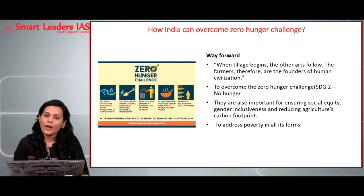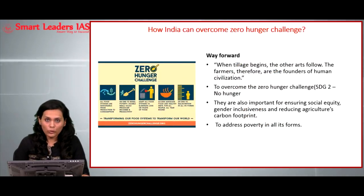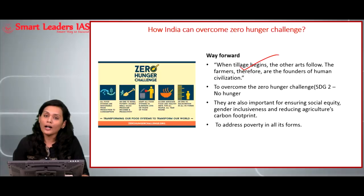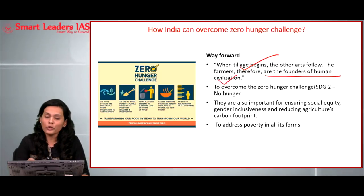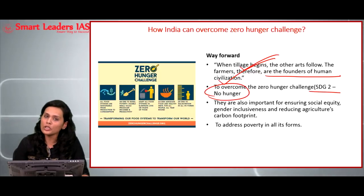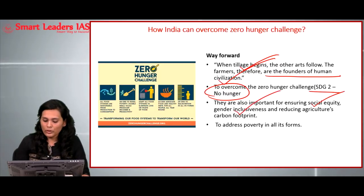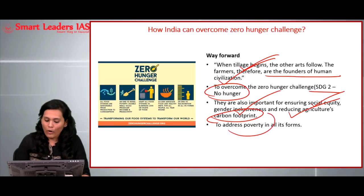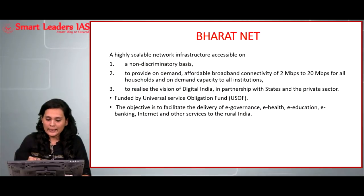As we trace history, any civilization is bound to grow only when the food producers — the agricultural sector — improve. 'When tillage begins, the other arts follow; the farmers therefore are the founders of human civilization,' as the quote says. Addressing the issue of hunger is also essential for India to achieve Sustainable Development Goal number 2, which calls for the elimination of hunger. It is also necessary to ensure social equity, gender inclusiveness, and reducing agriculture's carbon footprint, in line with constitutional principles of providing equality to every citizen.